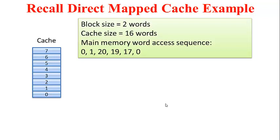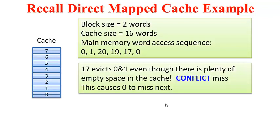We had found that word address number 17 and word address number 0 mapped onto the same cache block — that is, cache block number 0. So when 17 is accessed, it evicts the earlier fetched word addresses 0 and 1, and this results in a cache miss when word address number 0 is accessed subsequently.